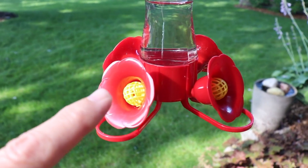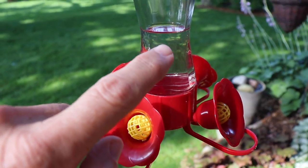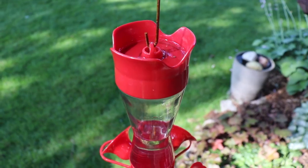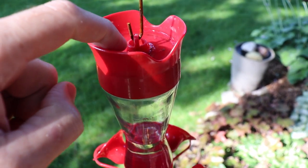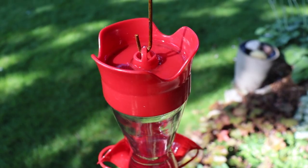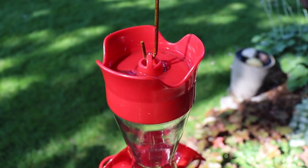If you have a hummingbird feeder, you'll know that ants love to get to that sugary mix and they'll figure out where it is and climb great distances to get to it. Most have an ant moat like this to prevent the ants from getting to it, but the problem is that they dry up very quickly. Let me show you how to easily make one that'll hold water for a lot longer.